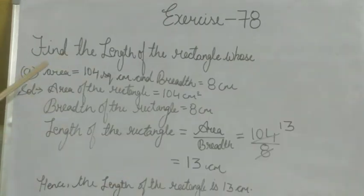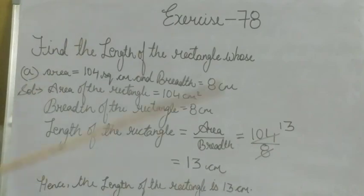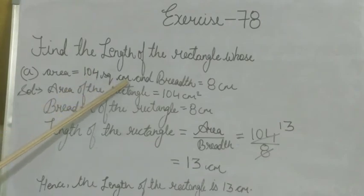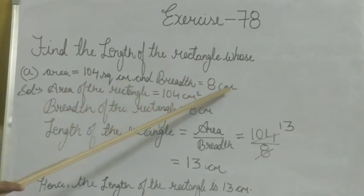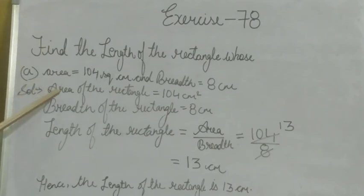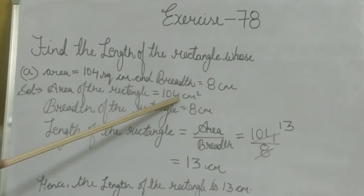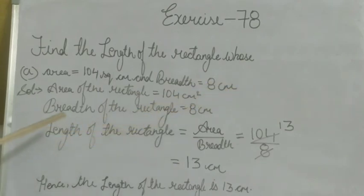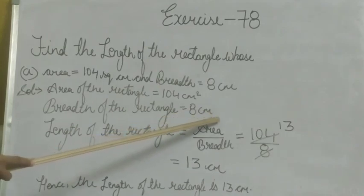Next question: find the length of a rectangle whose area is 104 square cm and breadth is 8 cm. The area of the rectangle is 104 square cm and the breadth of the rectangle is 8 cm.